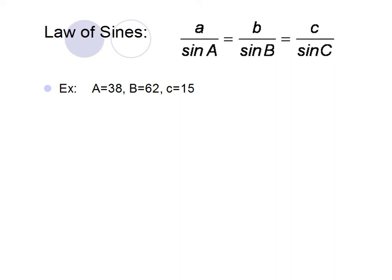Let's try an example. We have the Law of Sines written up. We'll use two of the fractions to set up a proportion — which fractions depends on what's given. I have angle A = 38°, angle B = 62°, and side c = 15. To write a proportion I need matching letters. Since I know angles A and B, I can find angle C: 180 − 38 − 62 = 80 degrees for angle C.